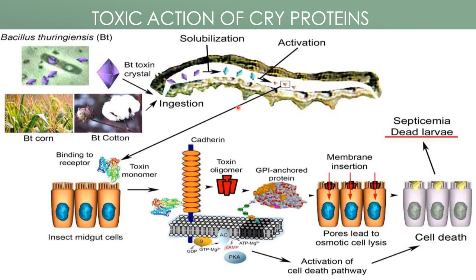As shown in this picture, from Bacillus thuringiensis we transform the cry gene into plants like corn and cotton — then it is called Bt corn or Bt cotton. These plants start to produce Bt toxin crystals in their stem and leaf. Once the bollworm starts to infect these plants, the crystalline protein or Bt toxin crystals will be ingested by the bollworm, where they get solubilized and activated.